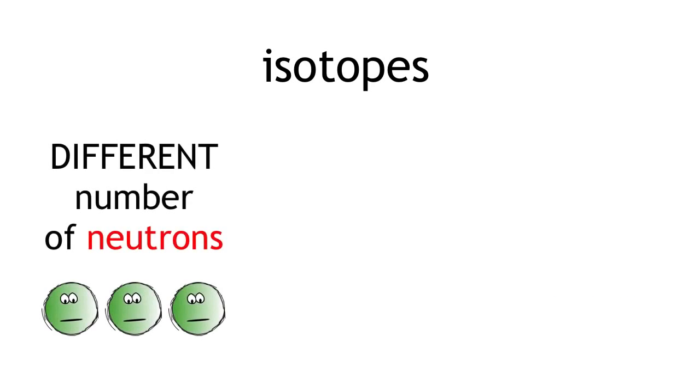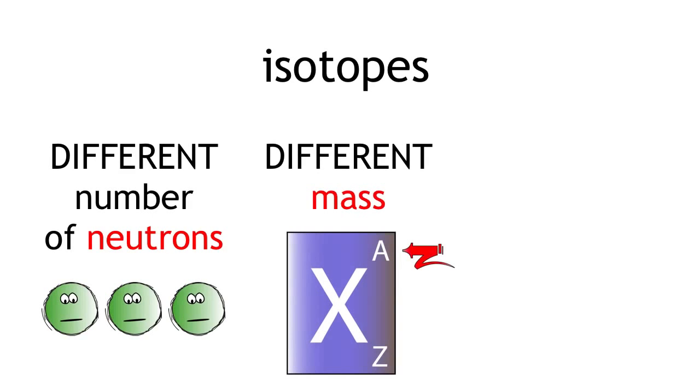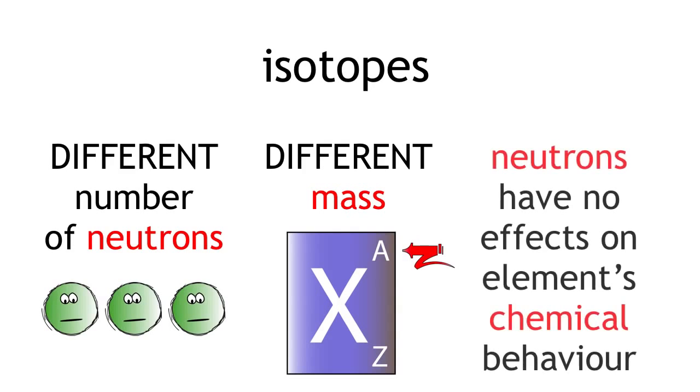Isotopes only differ in their number of neutrons and their mass. Their chemical properties are exactly the same because neutrons have no effect on an element's chemical behavior. This is controlled by electrons which we will discuss in another video.